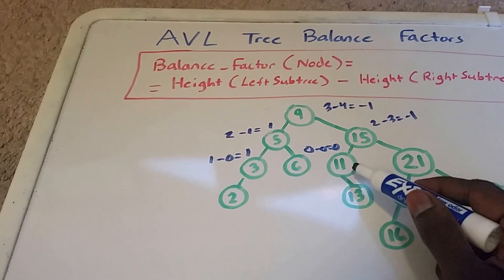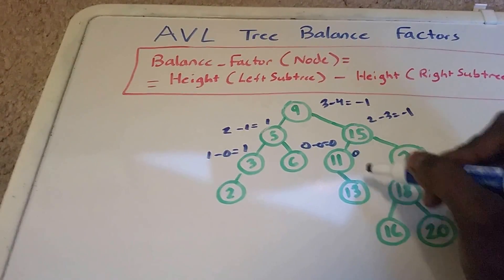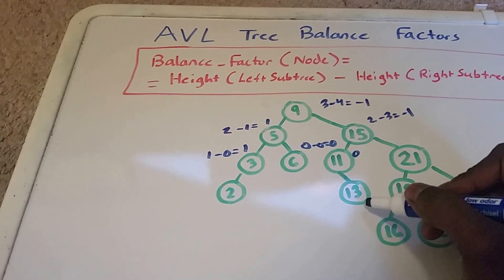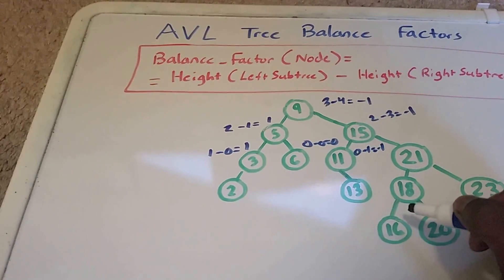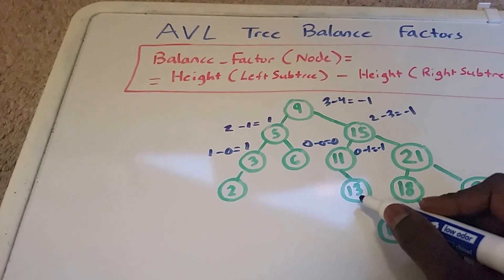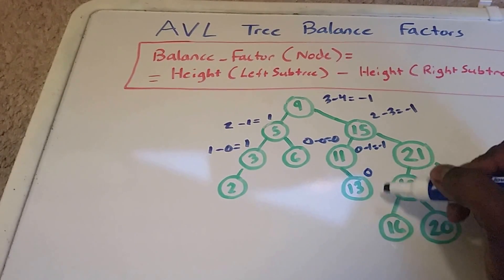Okay, so now we'll go to this 11 here. The left, there's nothing there, so it's 0. And then there's 1 on the right, 1 node, the number 13. So minus 1, and we get negative 1. And then this 13 here has no left subtree and no right subtree, so this just has a balance factor of 0.